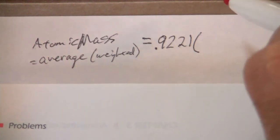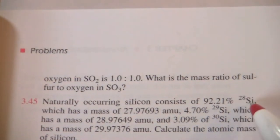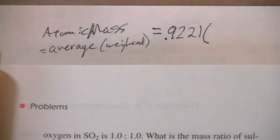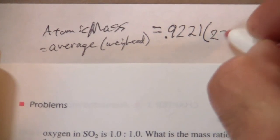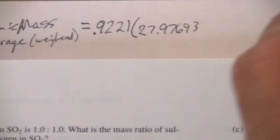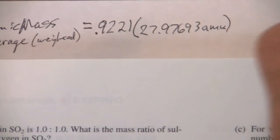It just simplifies it. So 92% is silicon-28, which has this mass, 27.97693 AMU, atomic mass units.